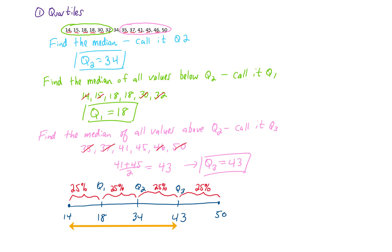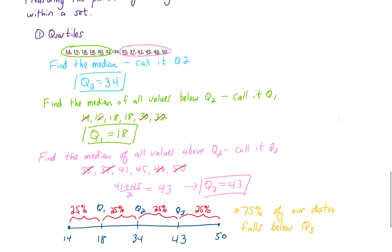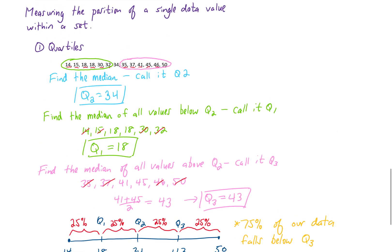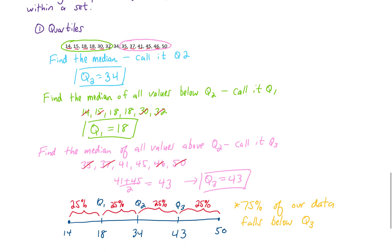Likewise, 25% of our data falls above Q3, and you can make several statements along those lines. We were talking about measuring the position of a single data value within a set, and we decided quartiles were one way to do that.